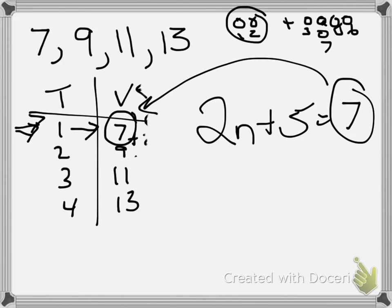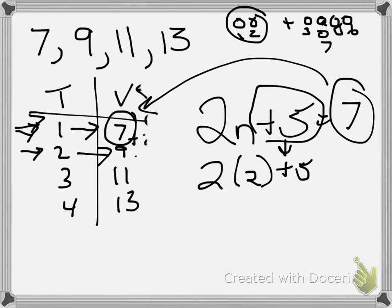Now will that work for the next one? Do I know that I have the right pattern rule? Let me check. If I take 2 and multiply it by the second term, 2 times 2, it should equal 9. Well, I know just by looking at this that 2 times 2 does not equal 9. 2 times 2 equals 4. But if I add the 5 again, that same 5 that I added up here, I get 2 times 2 is 4 plus 5 equals 9. And there's the value that I needed.